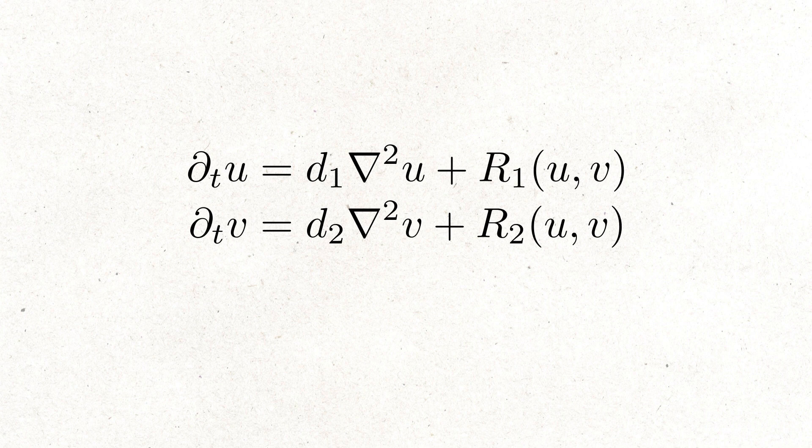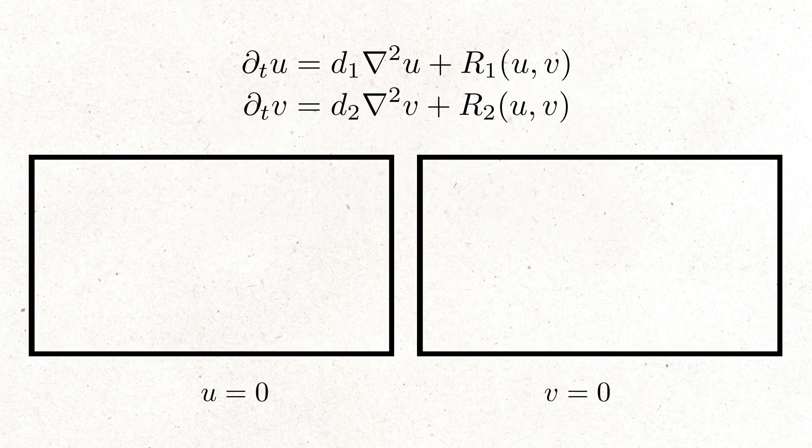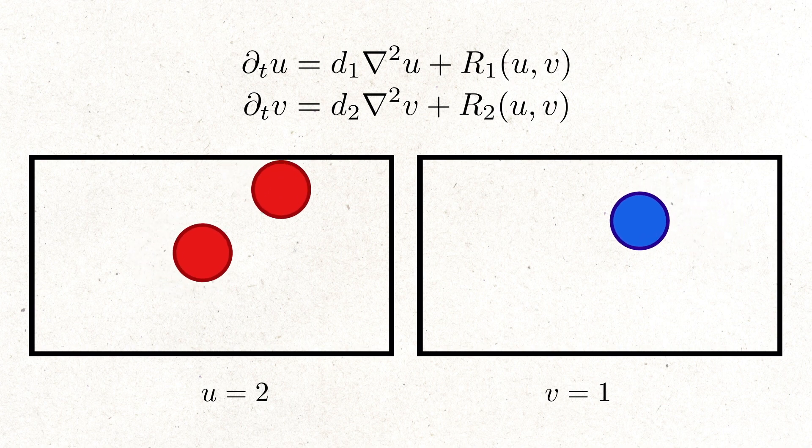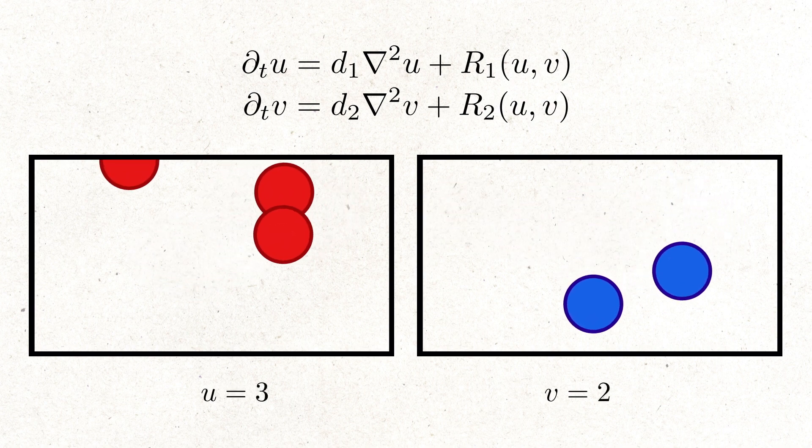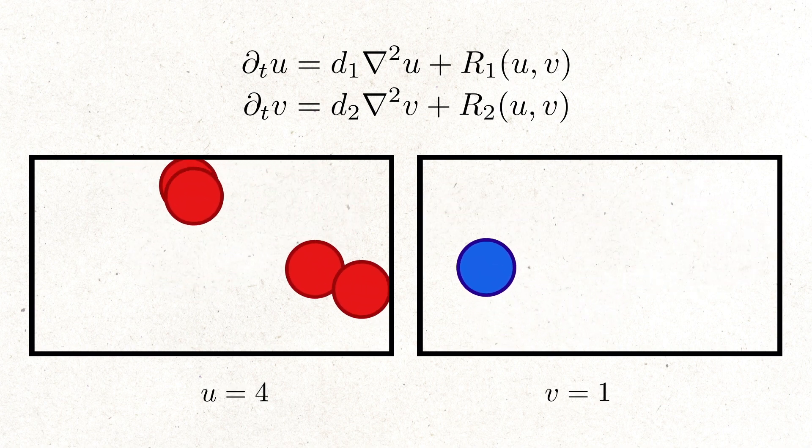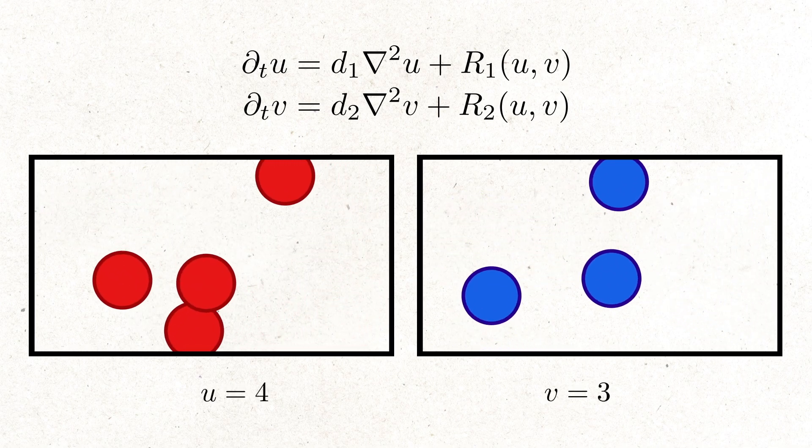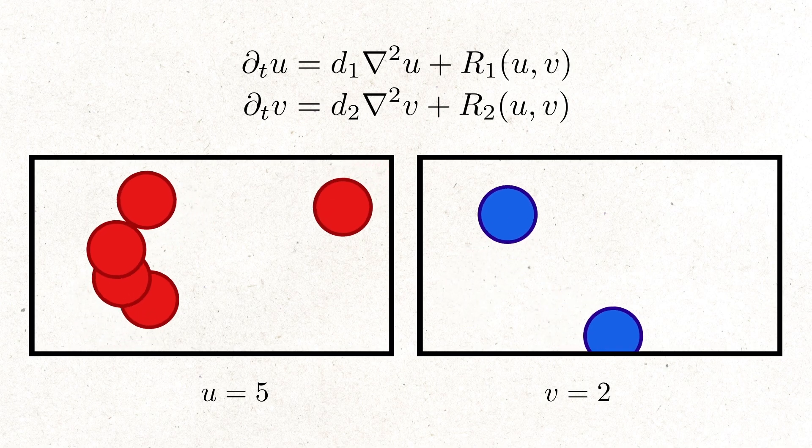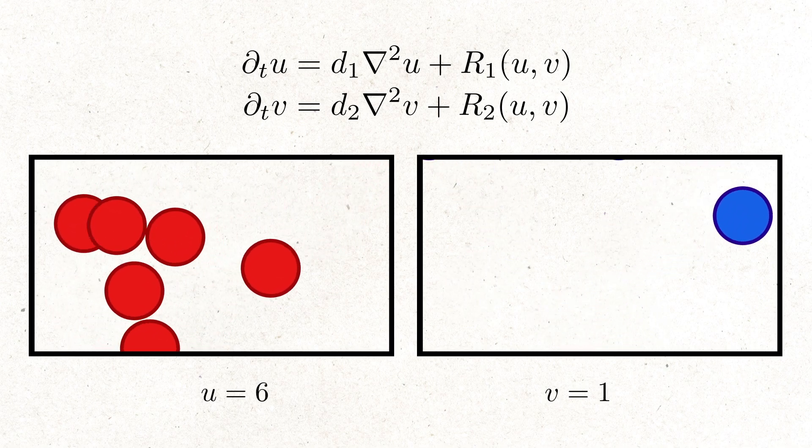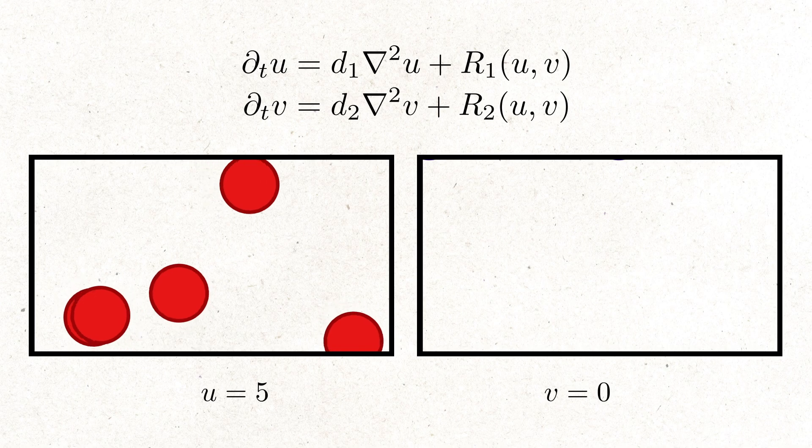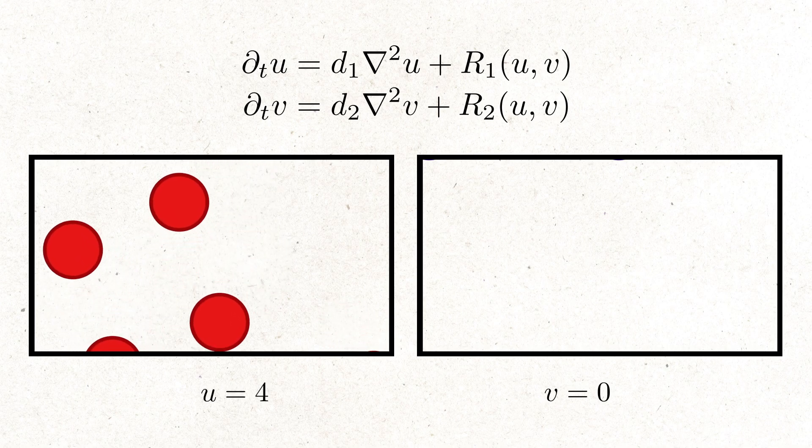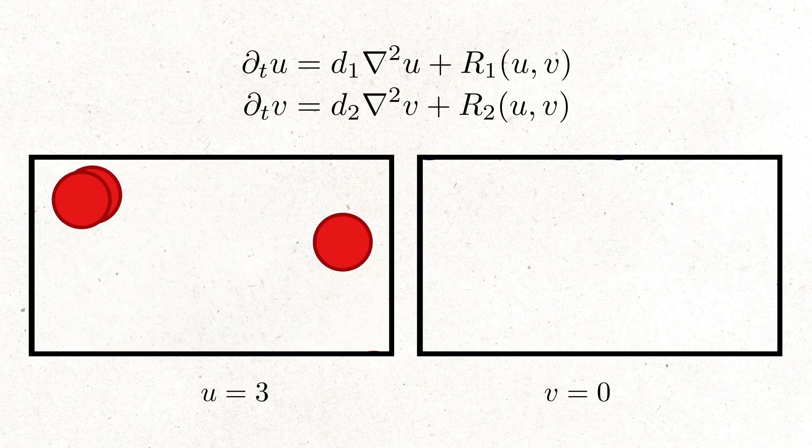To make things simpler, suppose we only have two morphogens, capital U and capital V. Function U measures concentration of substance capital U and function V is concentration of substance capital V. So, for example, if we have a lot of substance U in a small area, the U will take high values, and if we have barely any substance U in a given area, the U will take values close to zero.